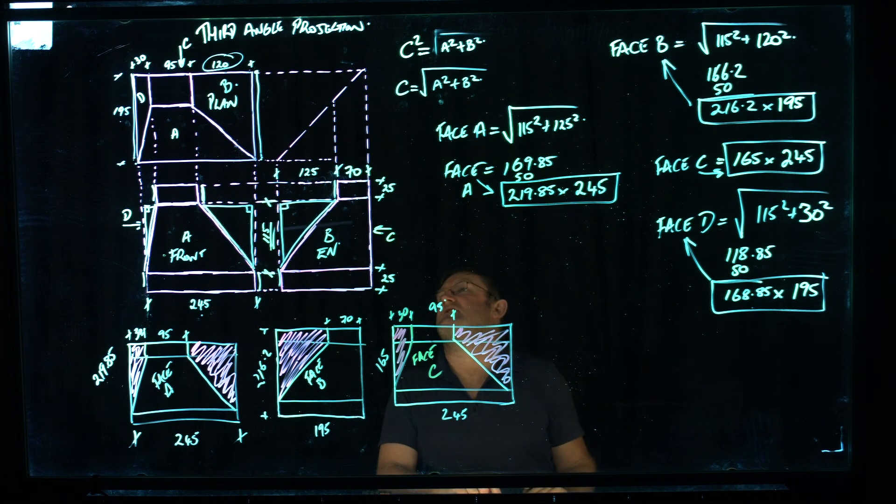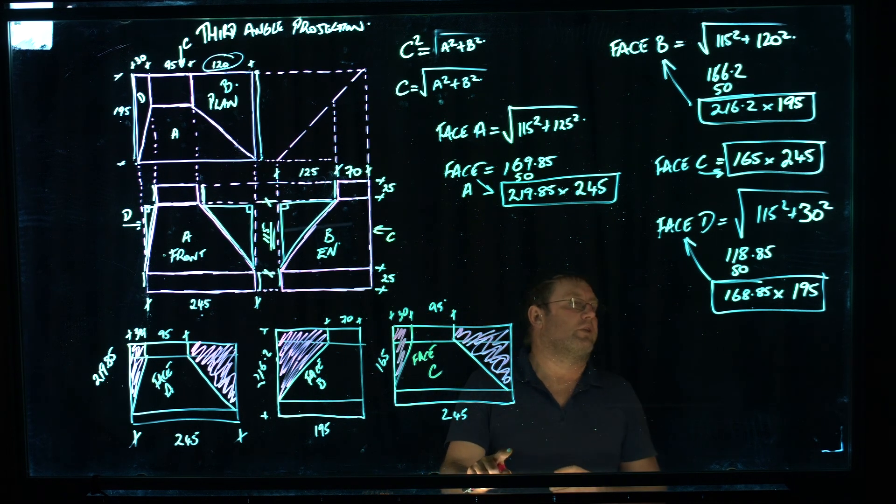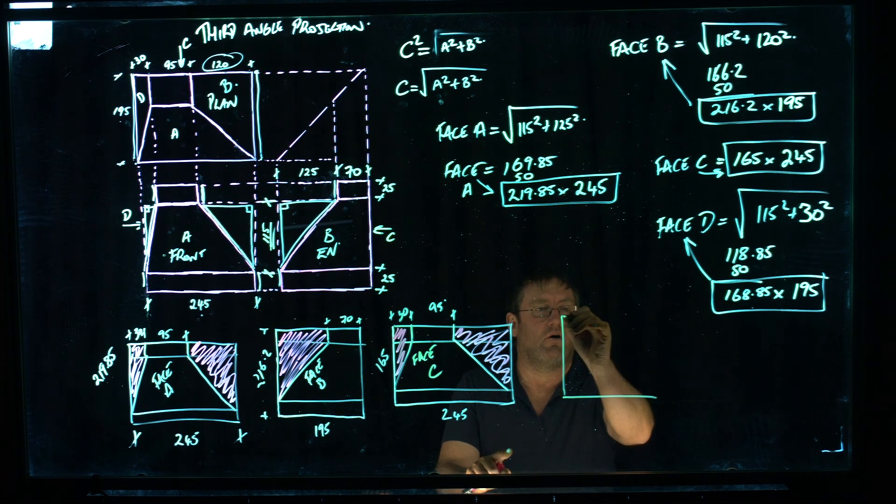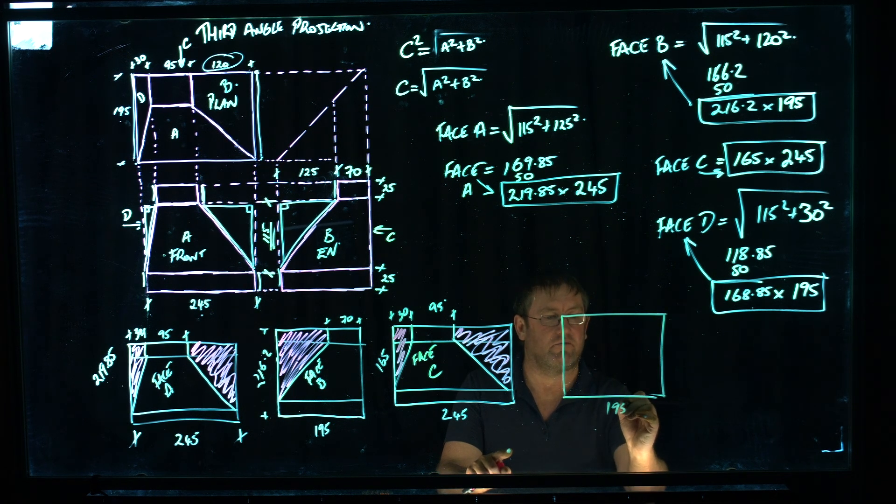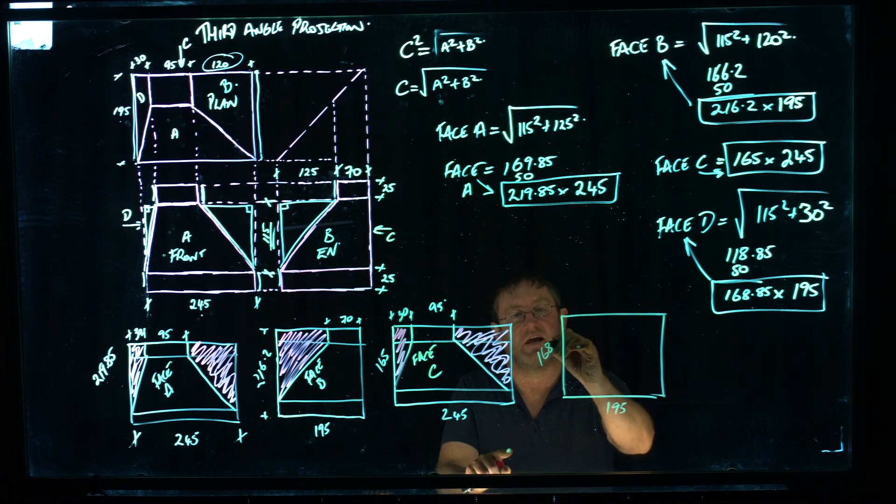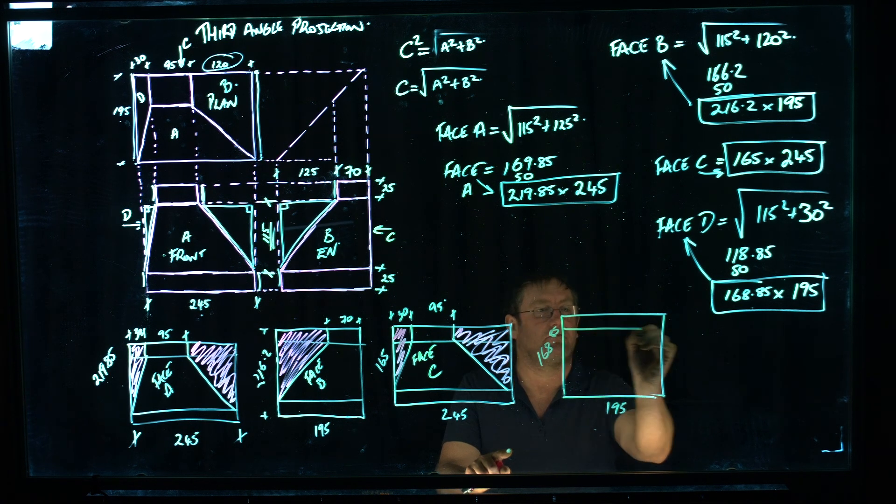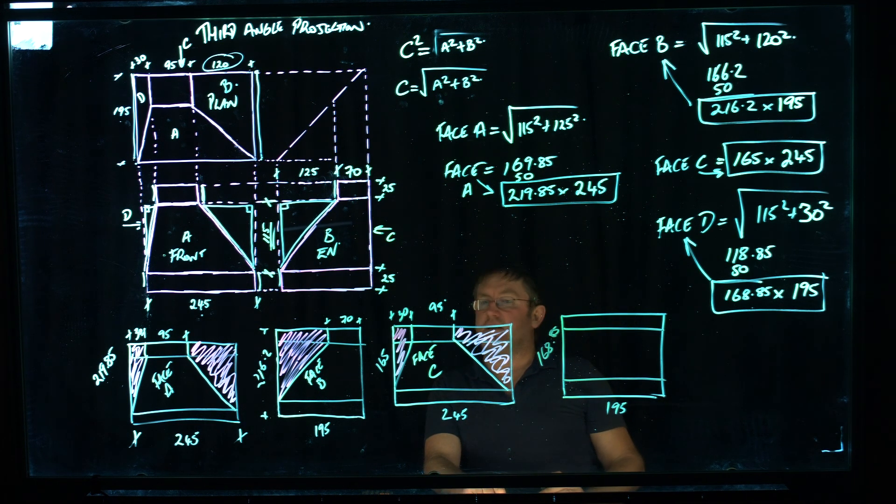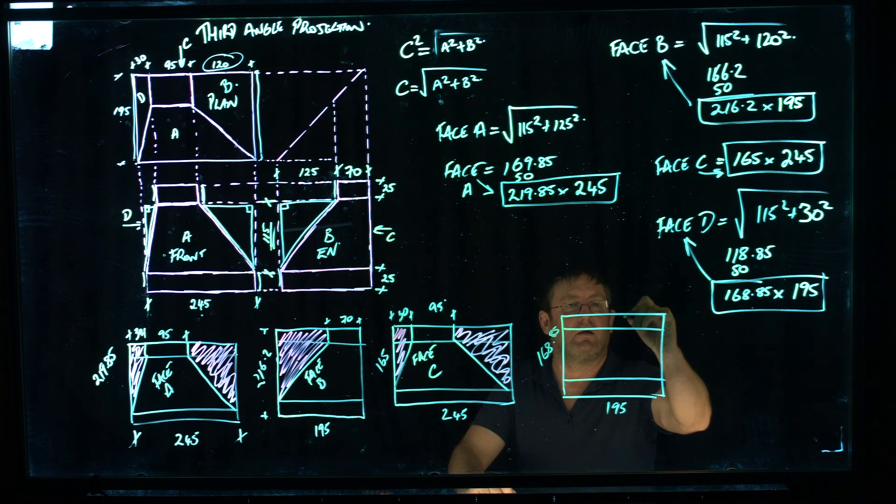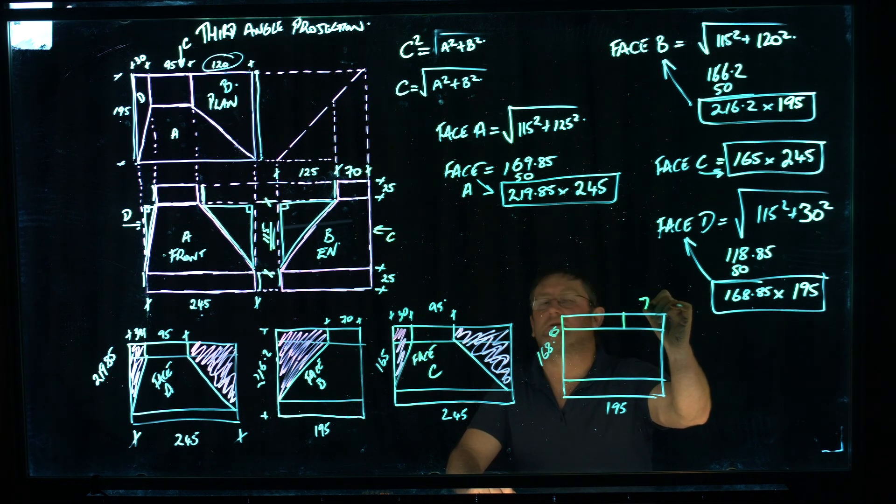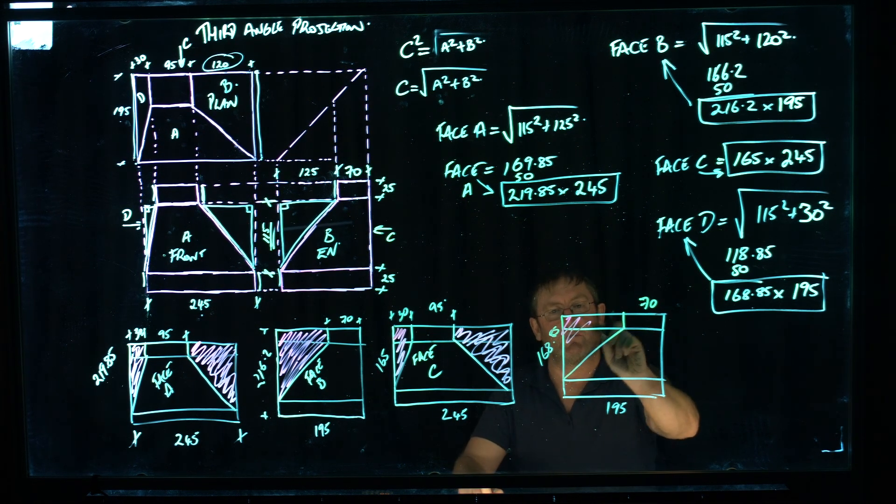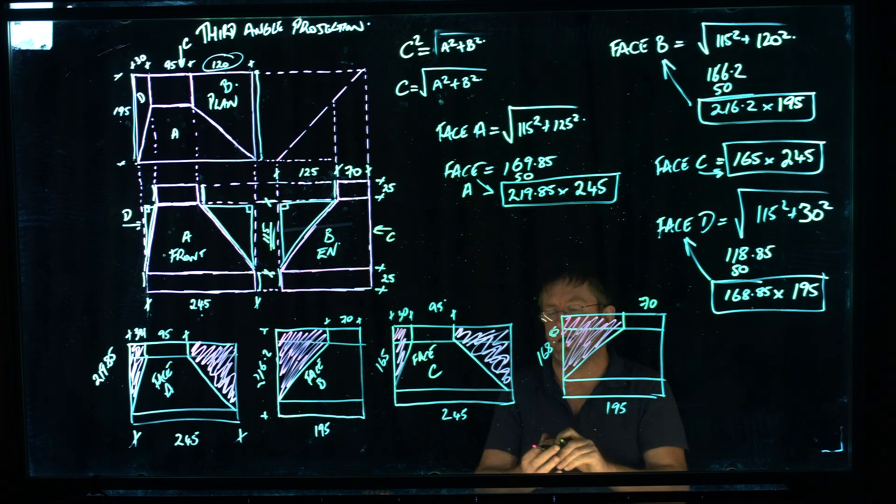And lastly face D. And I've got to make sure that I draw that right again. So we've got 169 by 195. 195, and this is 168.85. 25 on top, 25 on bottom. And okay, so I'm going to say that that is, that there is 70mm. That's our transition across there. This is the portion we're going to cut out. And this was face D.